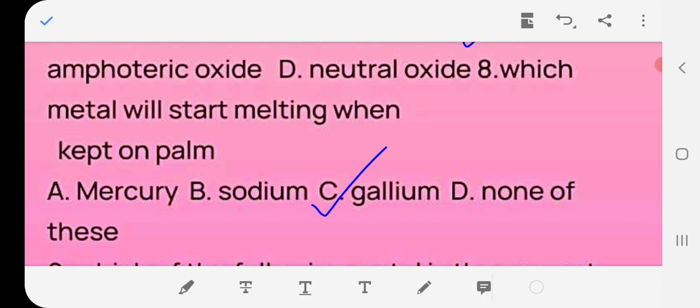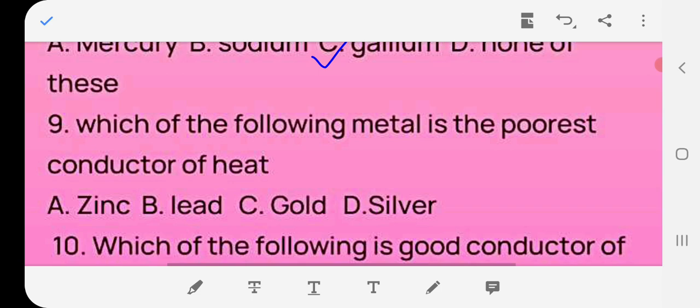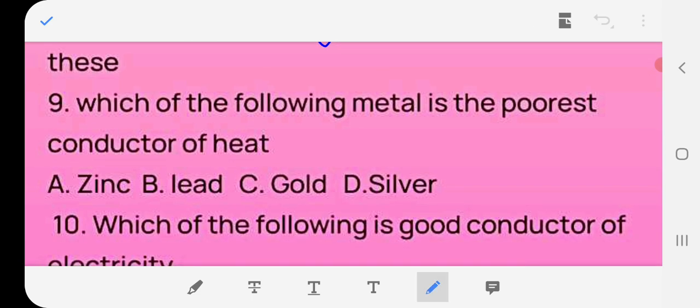Question number nine: which of the following metal is the poorest conductor of heat? The answer is B, lead.